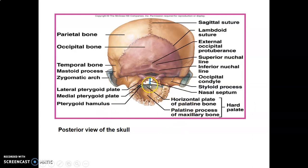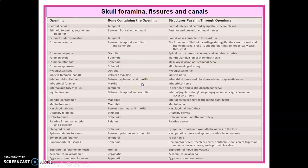The palate is made up of the palatine processes of the maxillary bone and the horizontal plates of the palatine bone. The medial and lateral pterygoid plates belong to the sphenoid bone, separated by the pterygoid fossa. You need to pause and learn all the labeled foramina on the skull: which bone they are housed in and what structures pass through them.